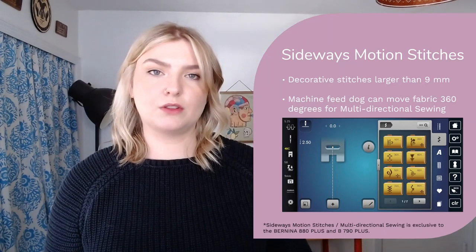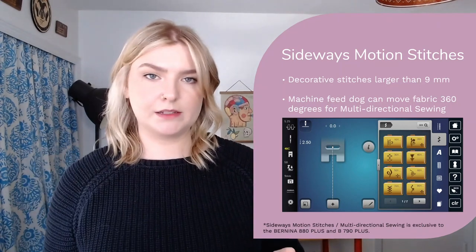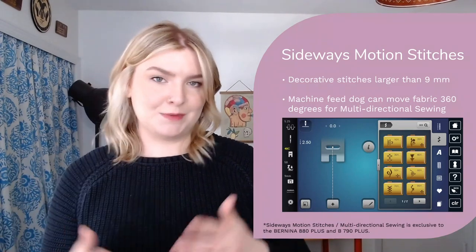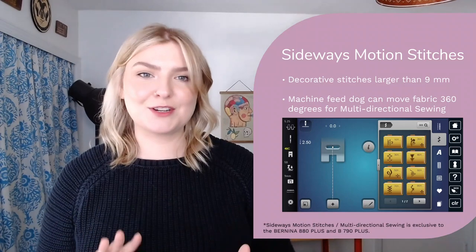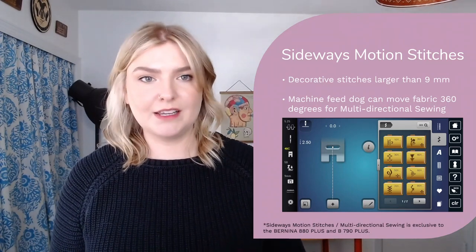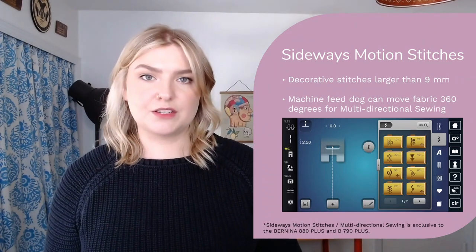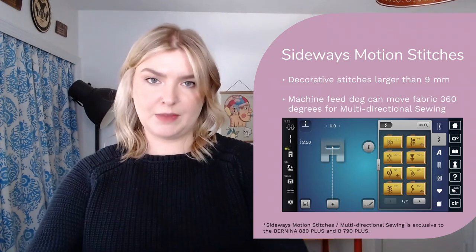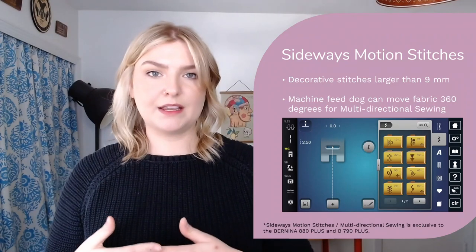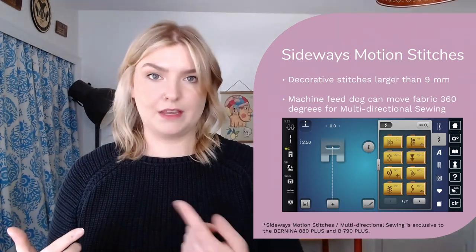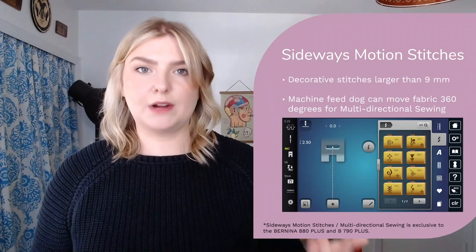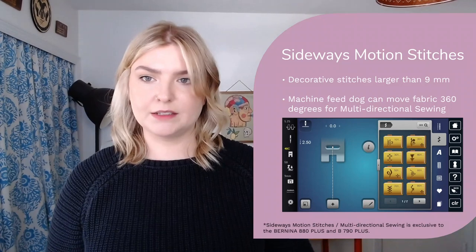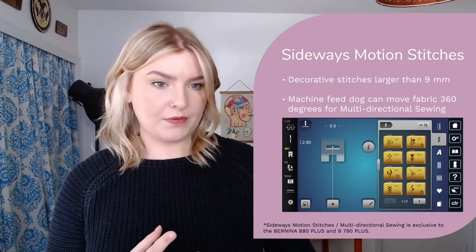These are decorative stitches that are larger than that maximum nine millimeters. You're probably wondering how that's possible. But these two machines work a little differently — the feed dog on these two can actually move the fabric in 360 degrees. So not just front to back or back to front, but it can also move the fabric left and right and everything in between. We call this multi-directional sewing, and these sideways motion stitches really take advantage of that.